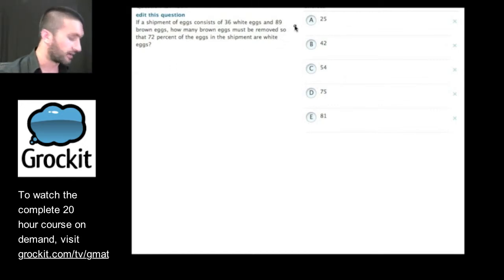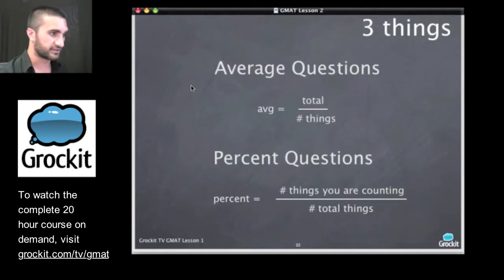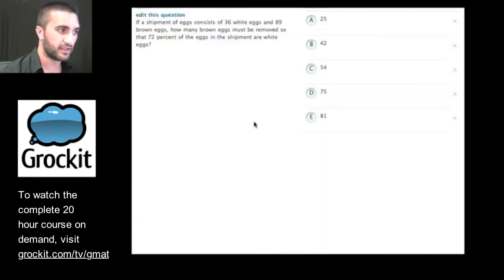Let's go ahead and continue and work a few more questions together here. If you notice, this one is not a data sufficiency question, so we don't need to do the 1, 2, 10. But let's go ahead and use our same techniques: parse the language, analyze it, break it down, re-represent it on our scratch pad. If a shipment of eggs consists of 36 white and 89 brown eggs, how many brown eggs must be removed so that 72% of the eggs in the shipment are white eggs? We have percent, the number of things we're counting, and the total number of things.